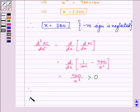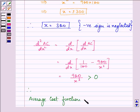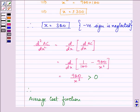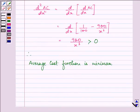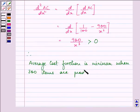Therefore, the average cost function is minimum when 300 items are produced. This completes the session. Hope you understood it well and enjoyed it also.